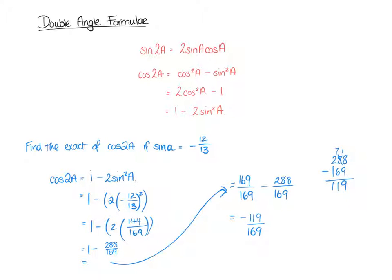All I did for that calculation was — because we've got 169 take away 288 — flip them over and make the answer negative. Because the whole point of this question is that you wouldn't have a calculator; you're finding an exact value. So being able to do that little calculation at the side is fine. In Higher, do what you've got to do to get the answer. If you've got to do little subtraction sums in the margins at the side, that's fine. Don't rub them out, just leave them there — there's nothing wrong with it.